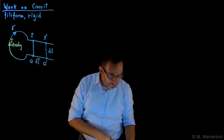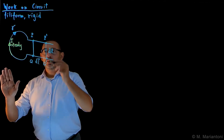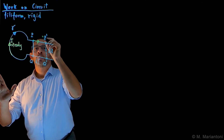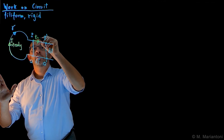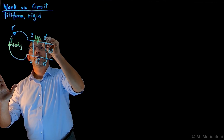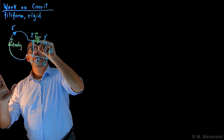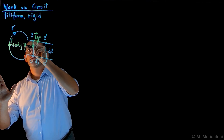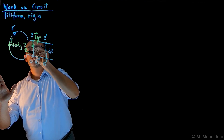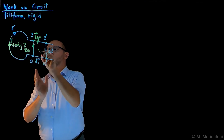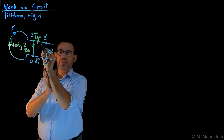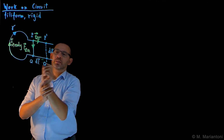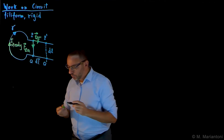Let's define a few unit vectors. This unit vector here is T_{P,P'}, and this unit vector here is T_{P,Q}. T_{P,Q} goes in the same orientation as gamma to close up this loop; T_{P,P'} goes from P to P prime, and it's the same direction as Q to Q prime.